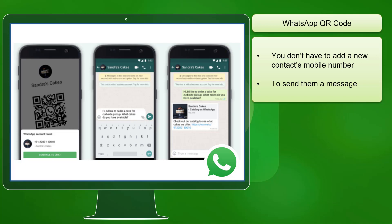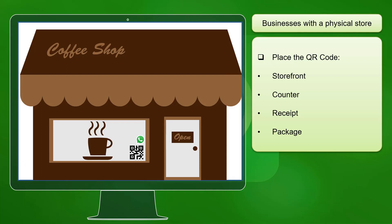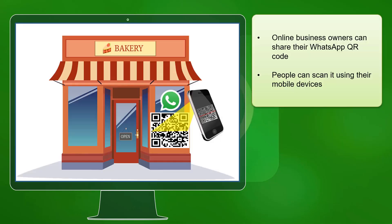You can now make use of the new QR code feature on WhatsApp. The new QR code feature applies to businesses that have a physical store, and they can place the QR code in their storefront and their counter as people pay for the products they purchase, the receipt, and product package. Online business owners can also share their WhatsApp QR code and people can scan it using their mobile devices.